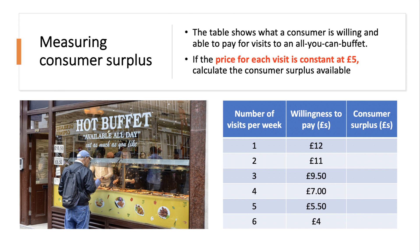We normally assume the law of diminishing returns holds, so willingness to pay may fall depending on the number of visits per week. The marginal satisfaction from each successive visit goes down, and a rational consumer should go ahead with a purchase if the price they're willing to pay is greater than the cost. Let's assume the cost is five pounds per visit.